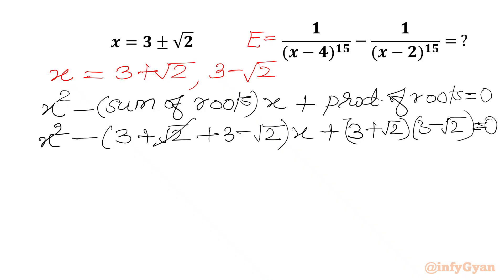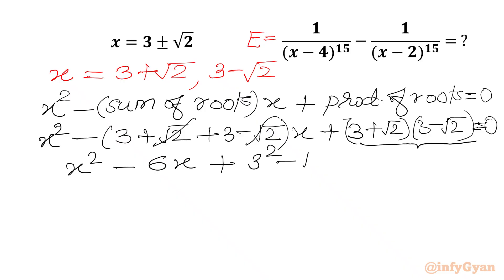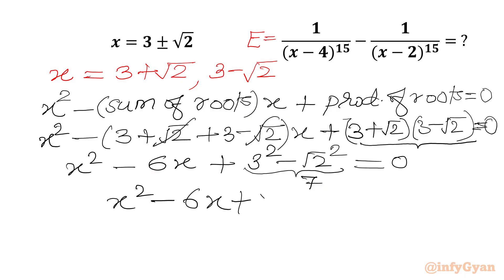The plus and minus root 2 cancel, so we write x squared minus 6x, and the product (3 plus root 2)(3 minus root 2) equals a squared minus b squared, which is 3 squared minus root 2 squared. Now 3 squared is 9 and root 2 squared is 2, so 9 minus 2 equals 7. Therefore our quadratic is x squared minus 6x plus 7 equal to 0.